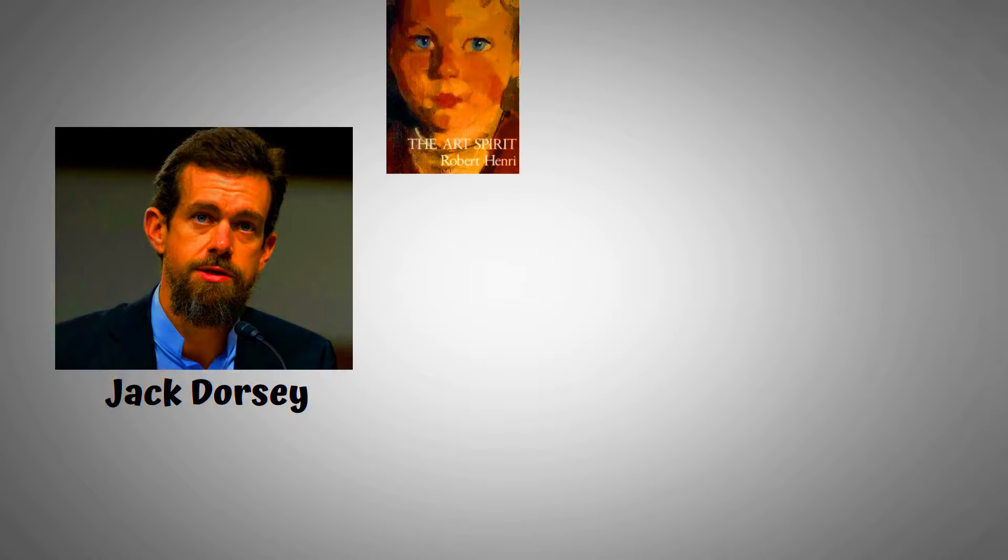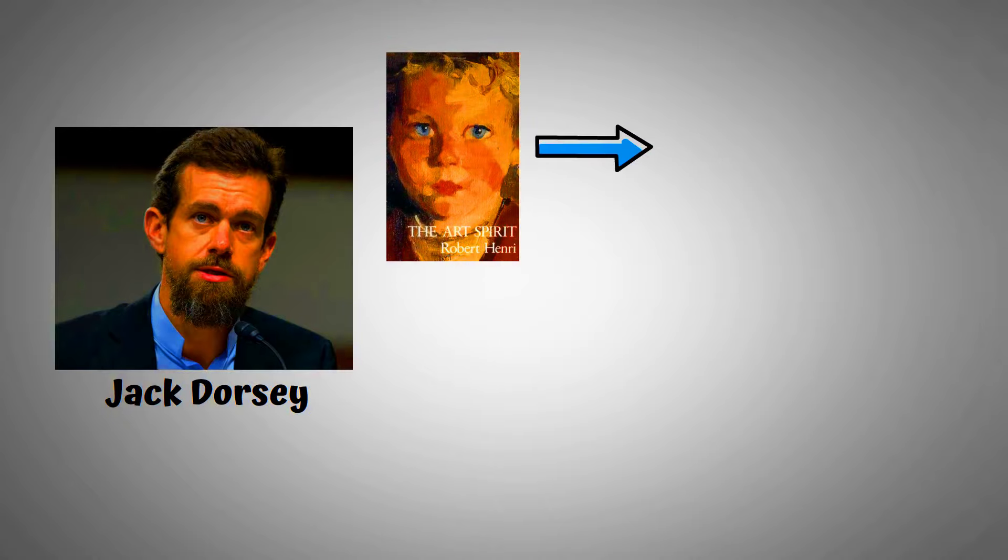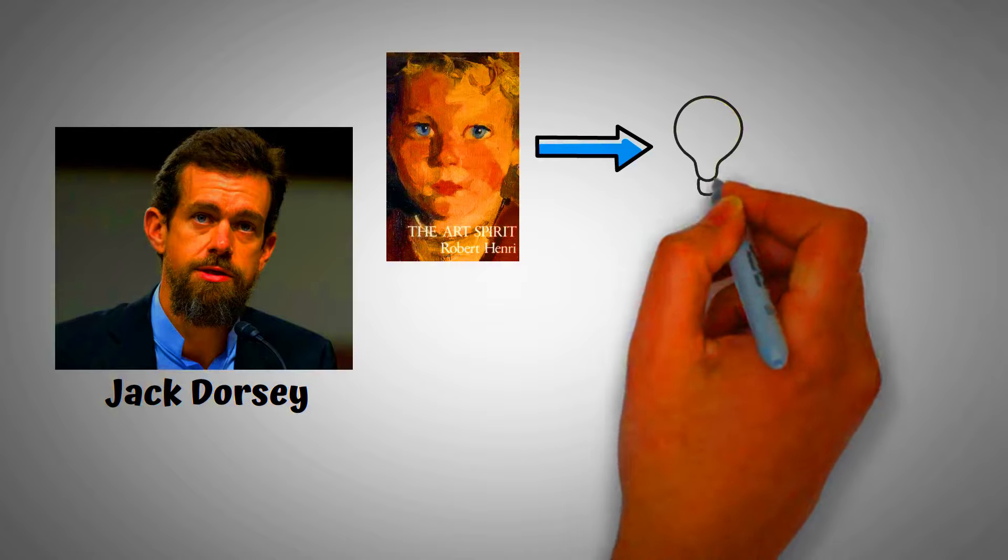Twitter co-founder and CEO Jack Dorsey credits the book The Art of Speed for his success. This book was written by Robert Henry, and in it he has written about the best artists of America. Dorsey learned from this book how the creative mind works.